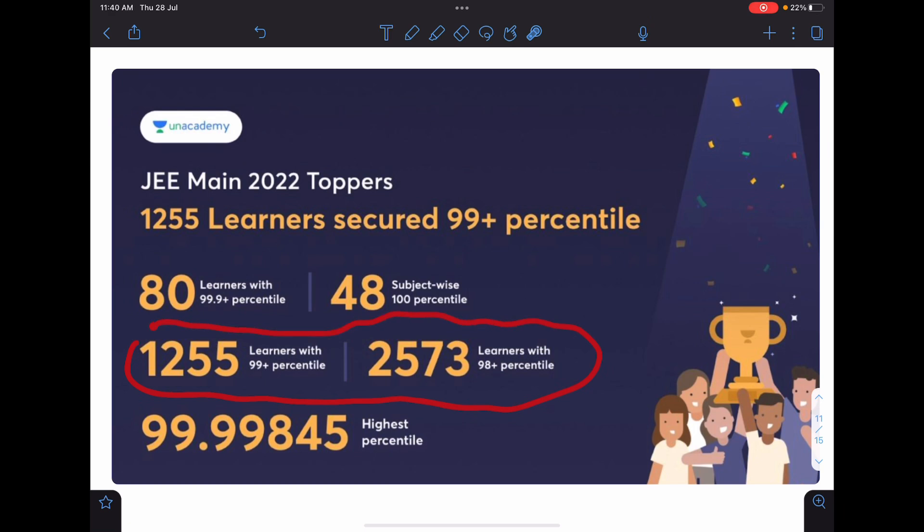The number of students who have got 98 plus percentile is 2573. The highest score is Vardhan Verma, 99.99845. This is the status.